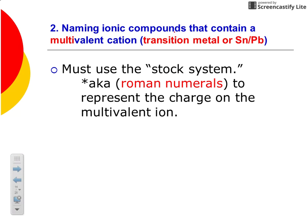The second type of ionic compound you'll run into contains a multivalent cation. Those are the transition metals, and also tin and lead — they are also multivalent. They have multiple charges. So in order to name these, we use what we call the Stock system, which means you use Roman numerals that represent the charge on that multivalent ion. For example, iron can have a plus two or a plus three charge.